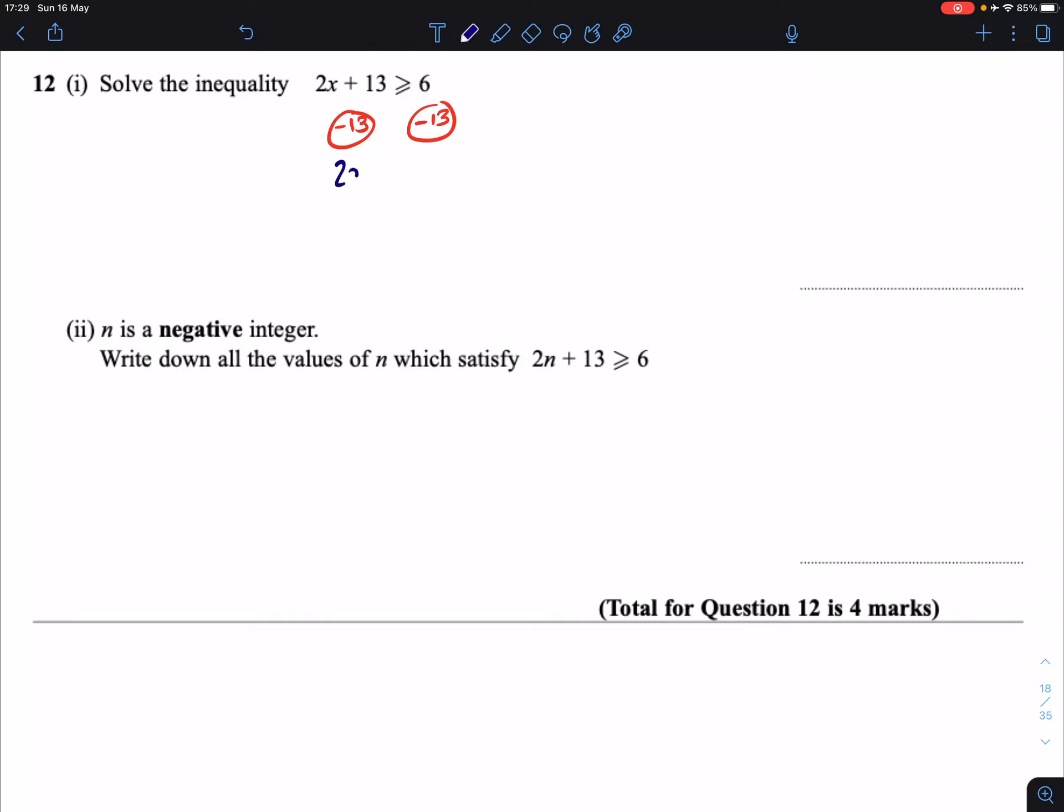We take away 13 from both sides, and we're going to end up with 2x is greater than or equal to minus 7. And then when we divide both sides by 2, we're going to end up with x is greater than or equal to negative 3.5. So that's our answer for that.